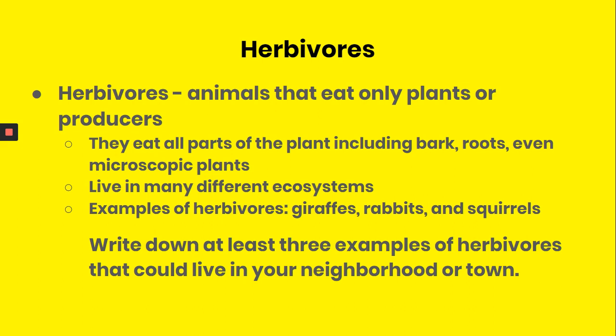Herbivores are animals that eat only plants or producers. They eat all parts of the plant, including bark, the roots, and even microscopic plants. They live in many different ecosystems. Some examples of herbivores are giraffes, rabbits, and squirrels.